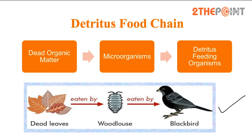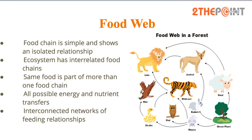Now let us look at a food web. A food chain is simple and shows an isolated relationship — it is a unidirectional relationship with a single arrow connecting all the different trophic levels. But a food web is more complicated. An ecosystem has interrelated food chains; the relationships in an ecosystem cannot be that simple.